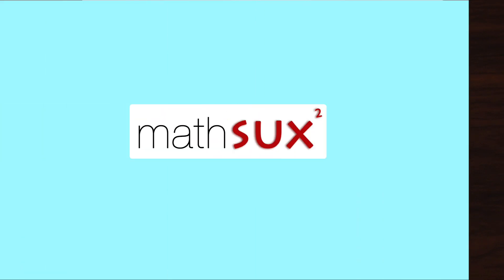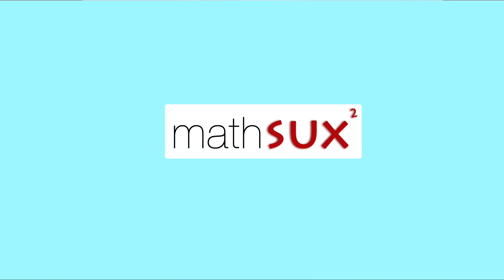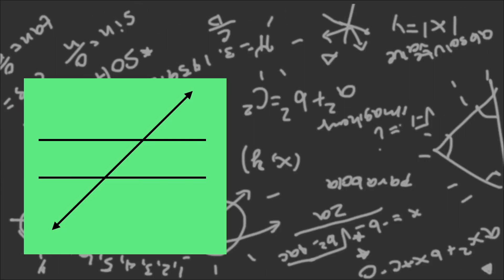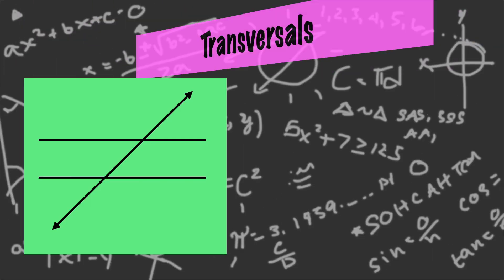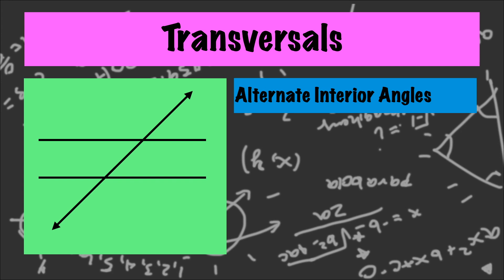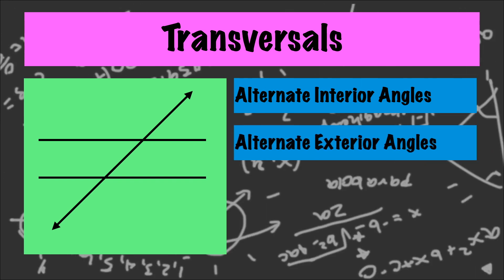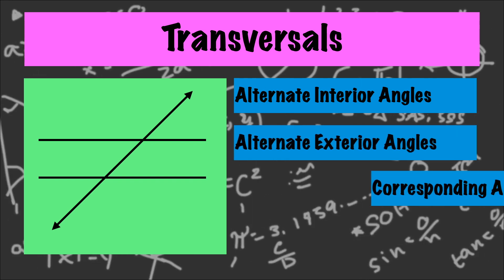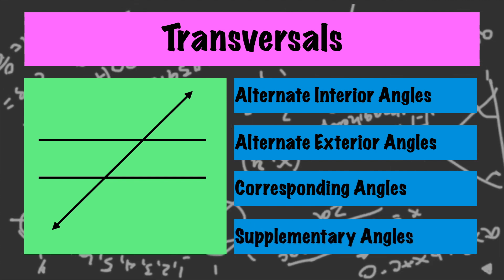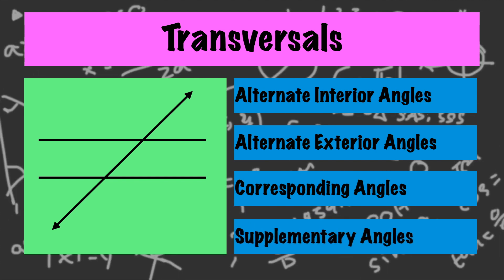Hi everyone and welcome to Math Sucks. This video is going to help you pass geometry. We're going to look at transversals by looking at alternate interior angles, alternate exterior angles, corresponding angles, and supplementary angles, and then tie them all together with an example at the end.